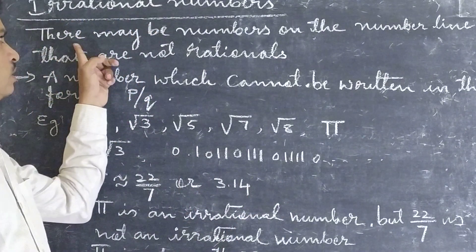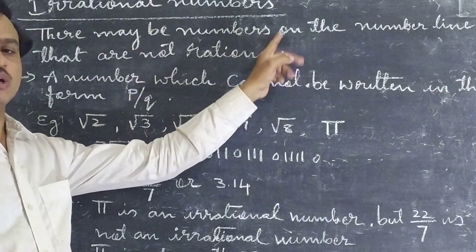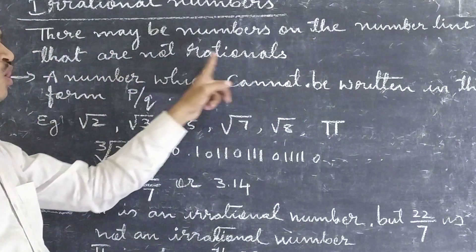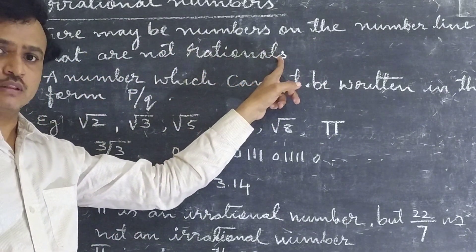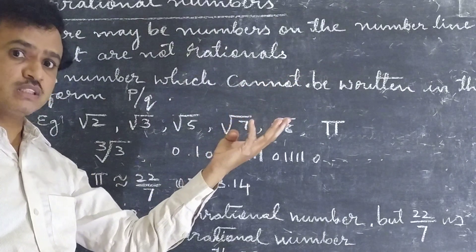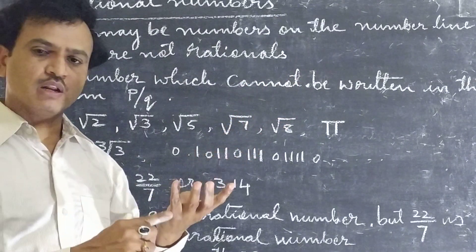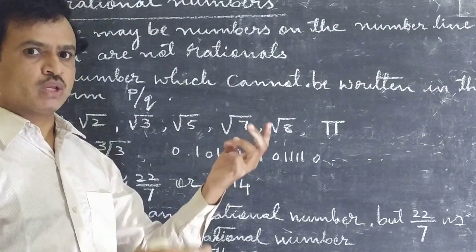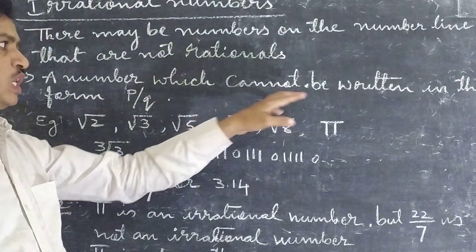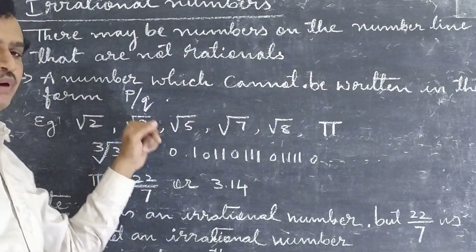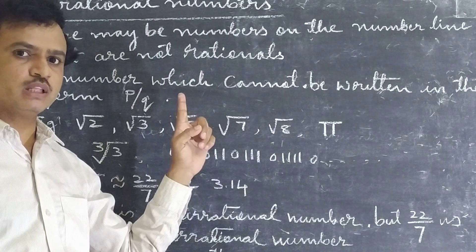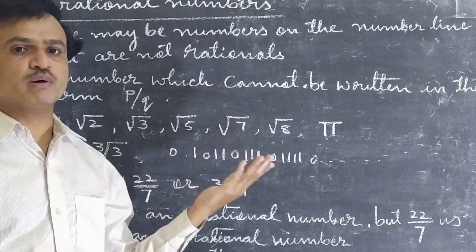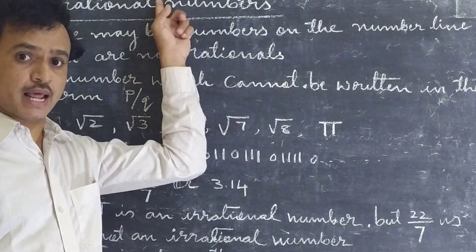Now the definition is here. There are so many numbers on the number line that are not rational. Rationals include all natural numbers, whole numbers, and integers. A number which cannot be written in the form P by Q — that type of number is said to be an irrational number.